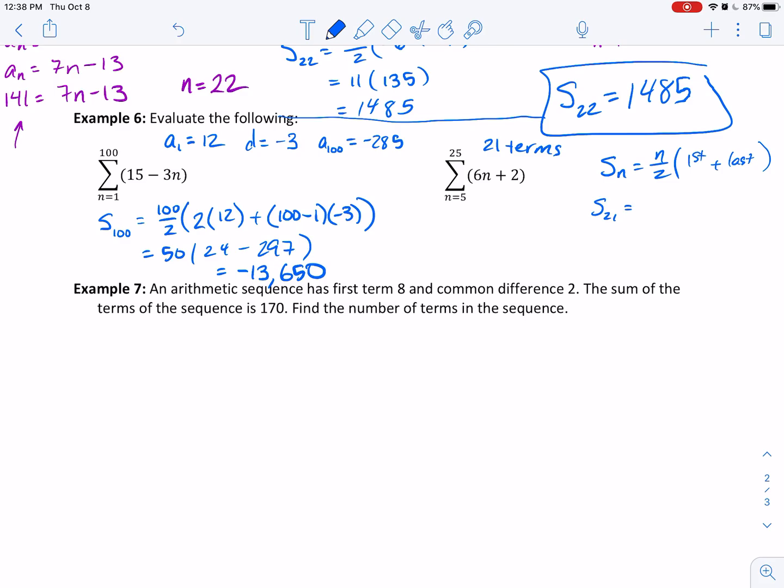Our number of terms is 21. What I'm going to do is use that formula where S_n equals the number of terms over 2 times the first term we care about plus the last term we care about. In this particular situation, the sum of 21 terms equals 21 over 2. The first term we really care about is when we plug in 5, so when I plug in 5, I get 32. And then I plug in 25. If I have 6 quarters, that's $1.50 plus 2 more, so 152. And that's how I would think through this problem.